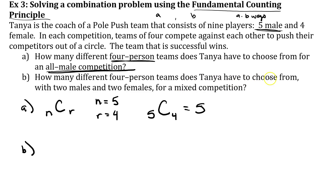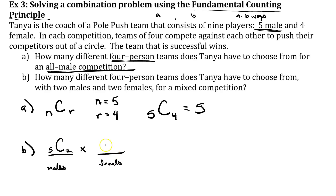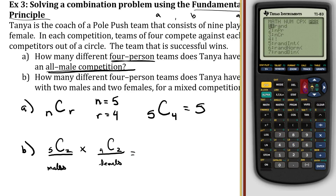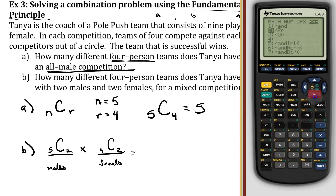For part B: how many different four-person teams does Tonya have to choose from with two males and two females for a mixed competition? We have two different spots — the male spot and the female spot, with two of each. For the males, we say five choose two, because we have five males and need two of them. For the females, we have four choose two. The fundamental counting theorem states we must multiply them together: five choose two times four choose two equals 60.